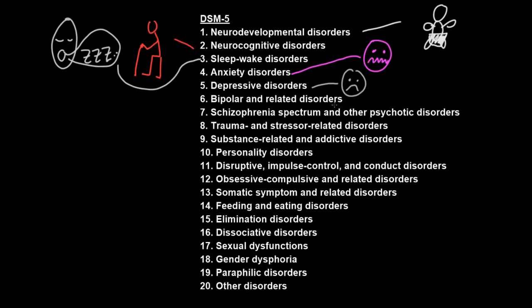Bipolar and related disorders involve distress or disability from abnormal mood, similar to the depressive disorders, but the difference is that these disorders may have periods of abnormally positive mood called mania. During periods of mania, people will often sleep little, talk fast, and may make bad decisions from impaired judgment about the risks of activities or their own abilities, and this can lead to all sorts of social or legal problems.